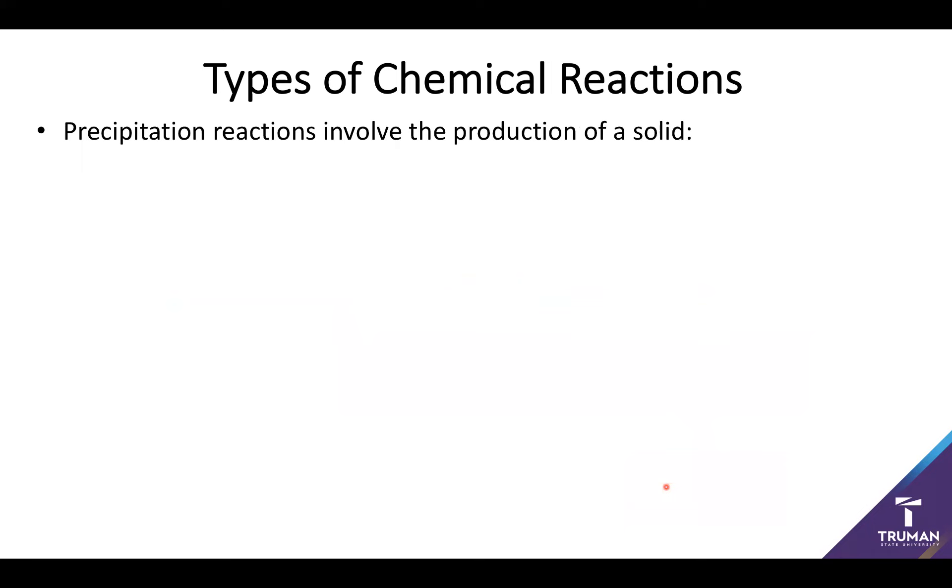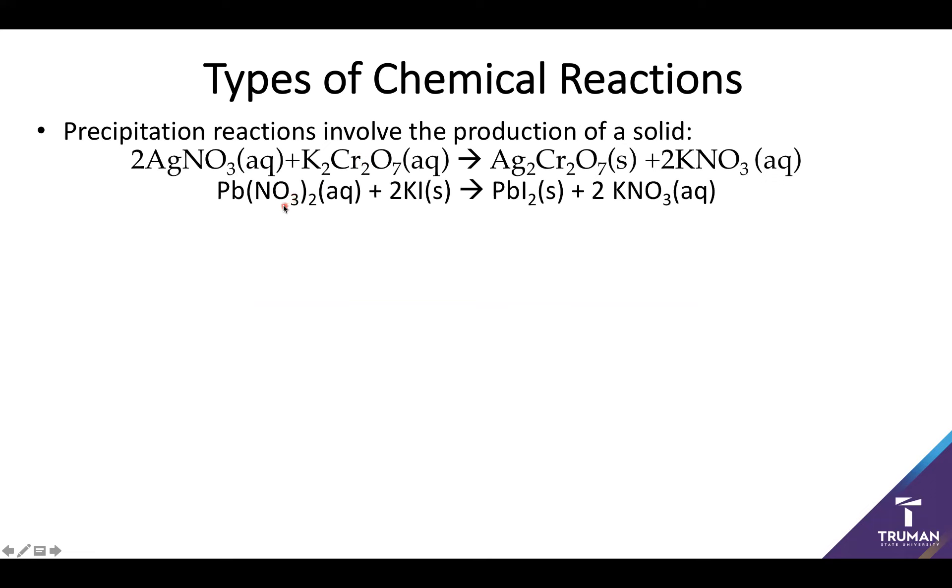Precipitation reactions involve the production of a solid. This includes things like the silver nitrate-potassium chromate reaction. But it also includes things like you can mix lead nitrate and potassium iodide to produce lead iodide and potassium nitrate. This is actually a really cool reaction, because you can add potassium iodide crystals to water, and it will remove most of the lead present in the water as solid.